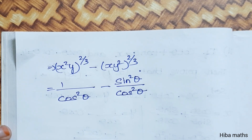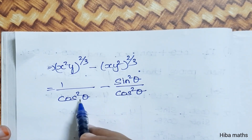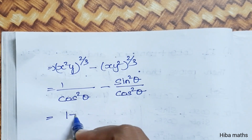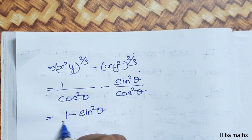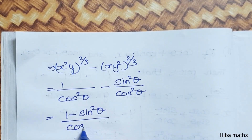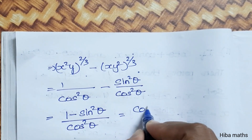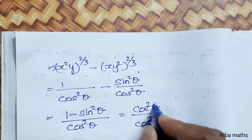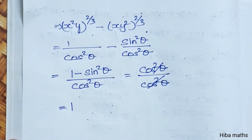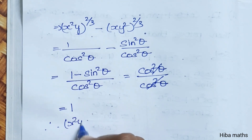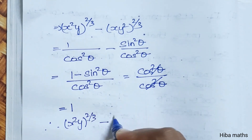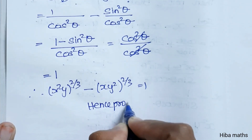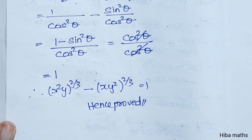So x²y^(2/3) minus xy²^(2/3) equals 1/cos²θ minus sin²θ/cos²θ. The denominator is the same, so we get (1 minus sin²θ) / cos²θ. Since 1 minus sin²θ equals cos²θ, this equals cos²θ / cos²θ equals 1. Therefore x²y^(2/3) minus xy²^(2/3) equals 1. Hence proved.